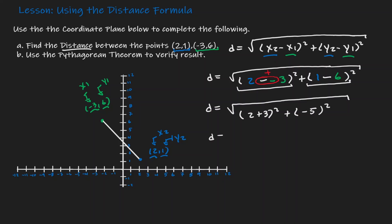Let's try to simplify this a little bit further. 2 plus 3 is 5. Negative 5 times negative 5, that is 25. 5 to the second is 25, the other 25 on the right. So here we have d is the square root of 50, which is approximately 7.07.